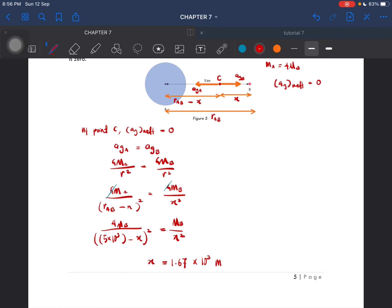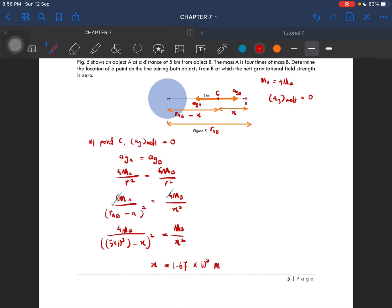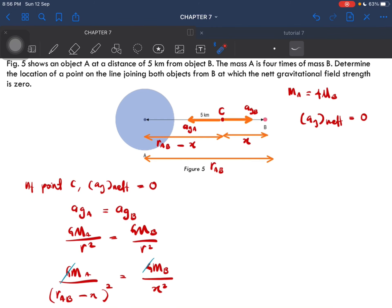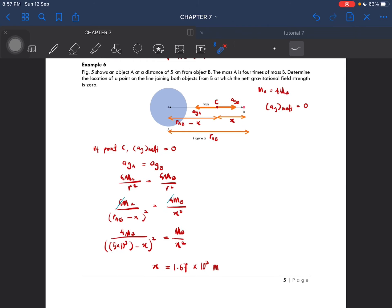So it is the value, the distance from point B in which the gravitational field strength is 0 is equal to 1.67 kilometer. It should only be from point B. So, the question asks from point B, not from point A. So that is the solution for example number 6.